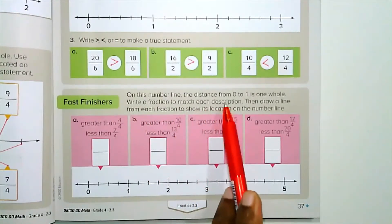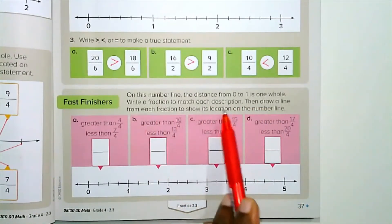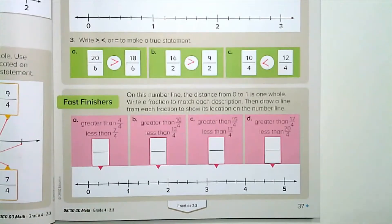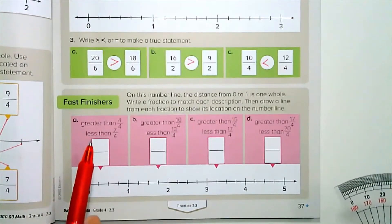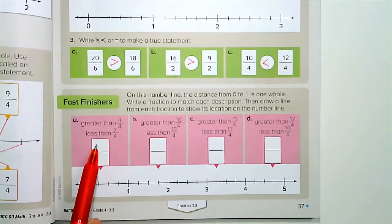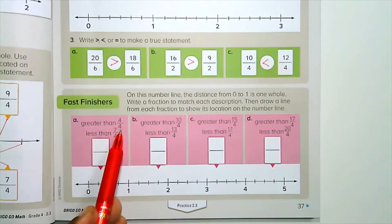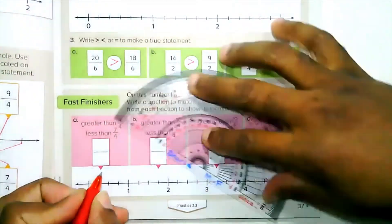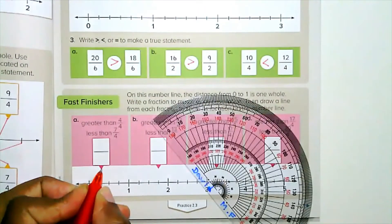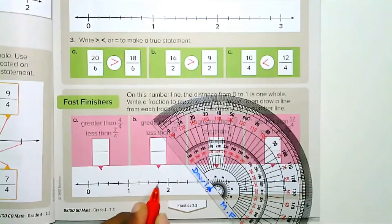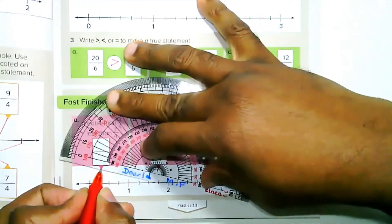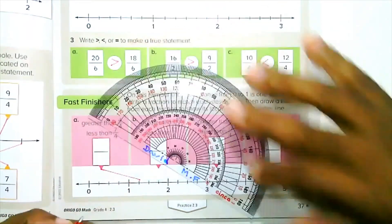On this number line the distance from zero to one is one whole. Write a fraction to mark each description, then draw a line from each fraction to show its location on the number line. Part a: greater than four-fourths but less than seven-fourths — so counting four, five, six, seven — it can be five-fourths or six-fourths, which would be here.